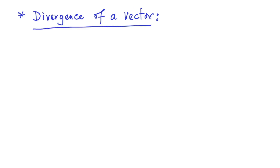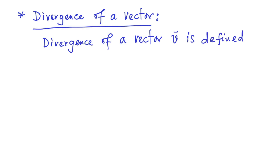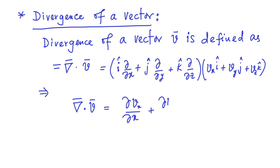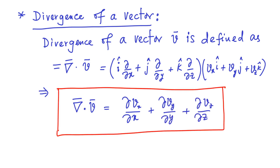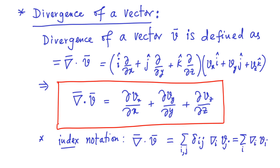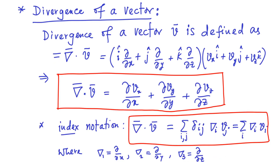Using the gradient operator, we can also define the so-called divergence of a vector. The divergence of a vector v is defined as grad dot v, that is, (i-hat del/del x + j-hat del/del y + k-hat del/del z) dot product with (vx i-hat + vy j-hat + vz k-hat). Using the definition of the dot product, divergence of v can be expressed as del vx/del x plus del vy/del y plus del vz/del z. In index notation, we can express the divergence of v as the summation over i and j of delta_ij times nabla_i times v_j, which is the same as summation over i of del_i v_i, where del_1 means del/del x, del_2 means del/del y, and del_3 means del/del z.